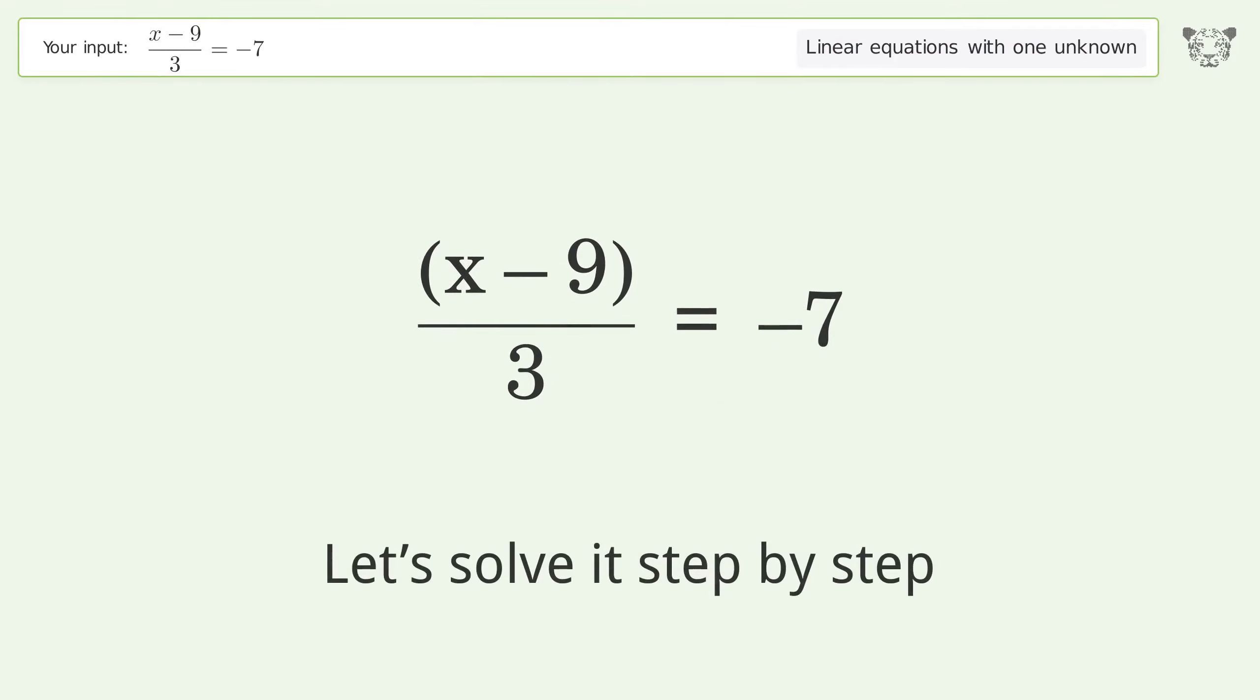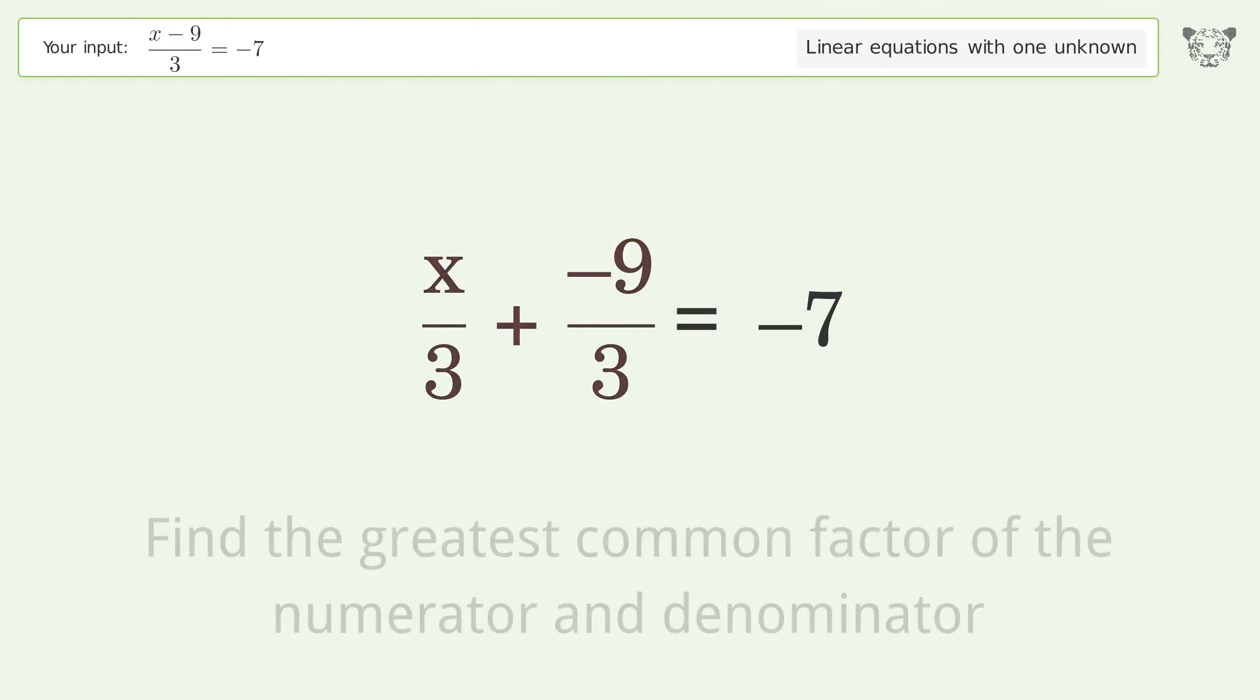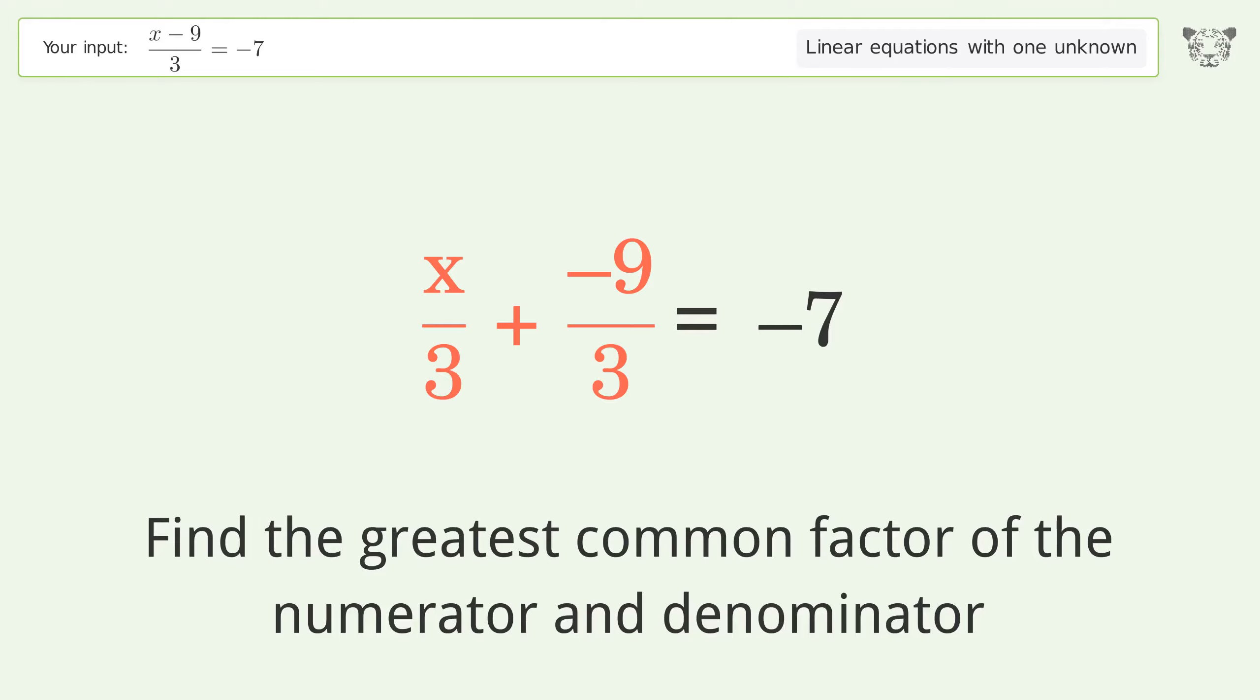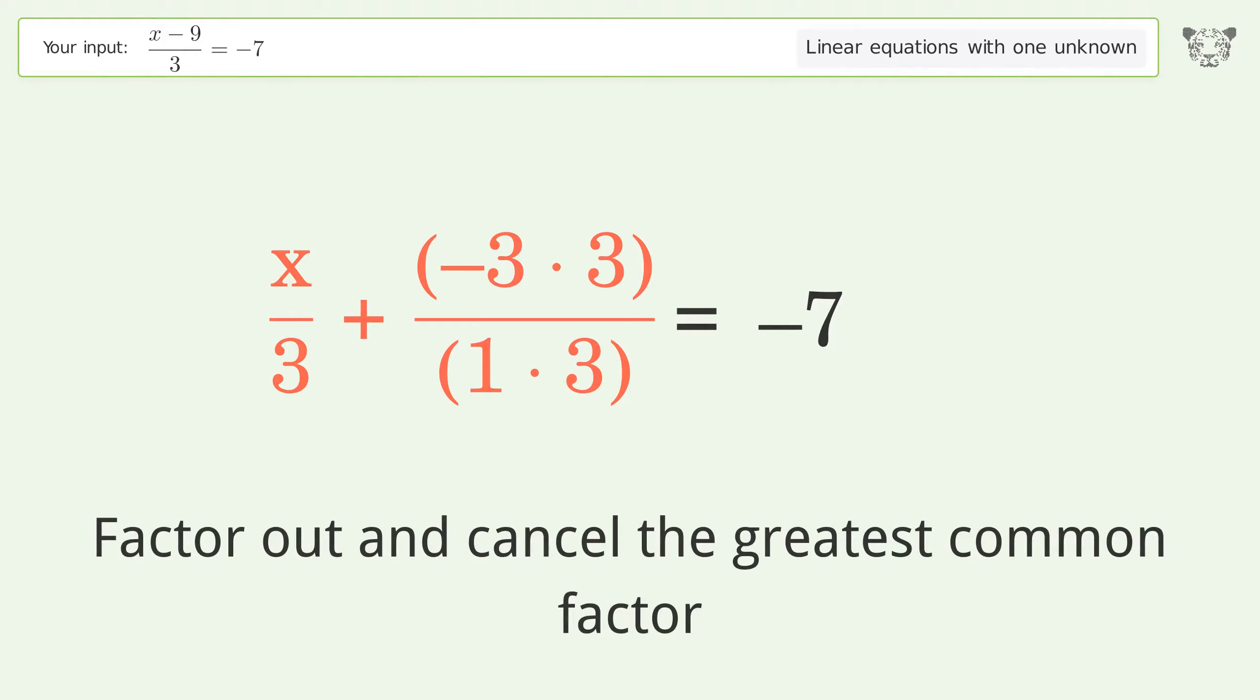Let's solve it step by step. Simplify the expression. Break up the fraction. Find the greatest common factor of the numerator and denominator. Factor out and cancel the greatest common factor.